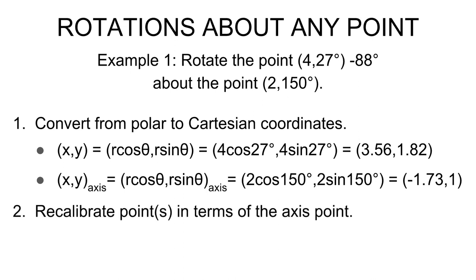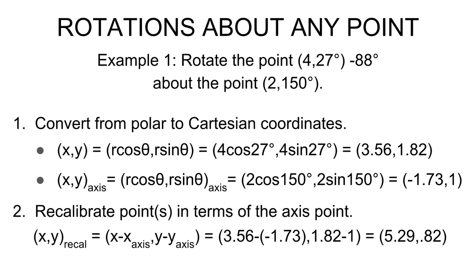Now we need to recalibrate the points in terms of the axis point. Now, you might have more than one point that you're trying to rotate. In this case, we only have one. So don't worry about the points there. So our point to be rotated in terms of the axis point is (5.29, 0.82). That is to say, it's 5.29 to the right of the axis point and 0.82 above the axis point. Now, by the way, the axis point will always be (0, 0) if you calibrate it to itself. But this is unimportant for our work.